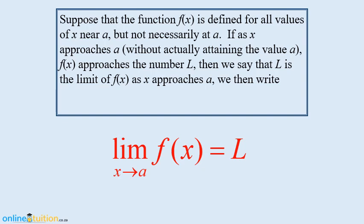Having just spoken about limits in a very general and crude sense, have a look at this definition of a limit. It says that suppose a function f of x is defined for all values of x near a, where a is just a number, but not necessarily at a. If as x approaches a — without actually attaining the value a — f of x approaches the number l, then we say that l is the limit of f of x as x approaches a. We can write this in compact form: the limit of f of x as x approaches a is equal to l.